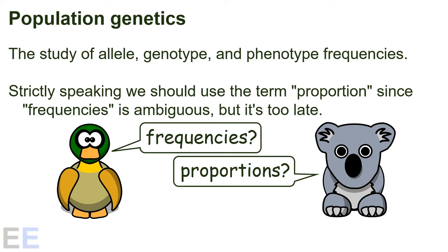Population genetics is the study of allele, genotype, and phenotype frequencies in populations. Strictly speaking, we should use the term proportion since frequencies is ambiguous. A frequency can refer to either the absolute number of something or its proportion, but it's too late to change the phrase now since it's been used for so long.